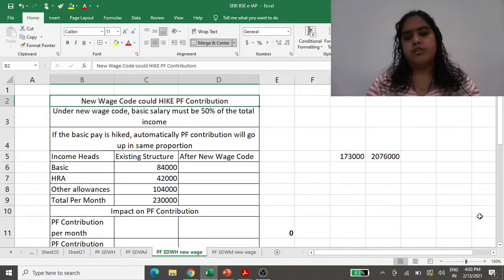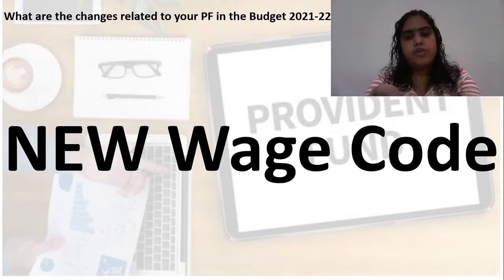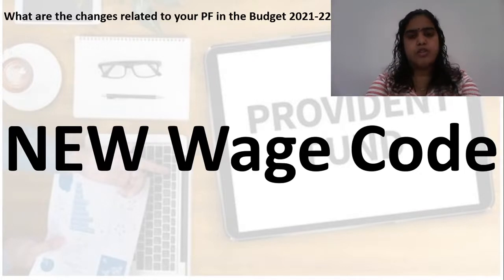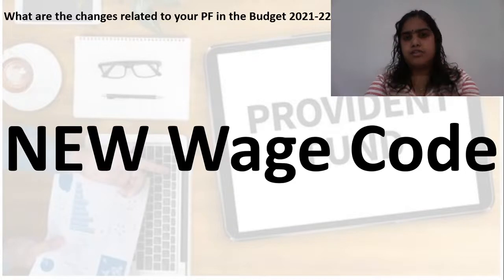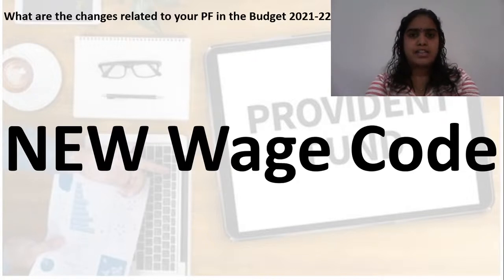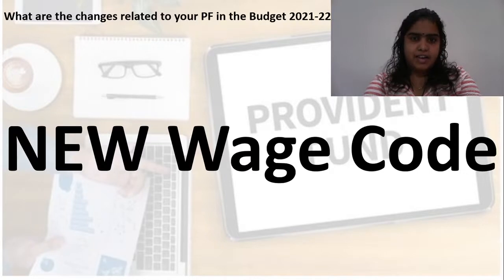Let us see why there is a requirement or need for a new wage code. If your take-home is say 1 lakh rupees, then there are several heads under which that take-home is structured: basic, HRA, TA/DA, and other allowances. Clubbing all together, your take-home is say 1 lakh rupees. In this case your basic pay used to be just 30,000 or 40,000 rupees, and there is a compulsion of paying 12% of your basic pay as a mandatory contribution in PF. So 12% on 30,000 comes to 3,600 — that is all you are contributing as mandatory PF.